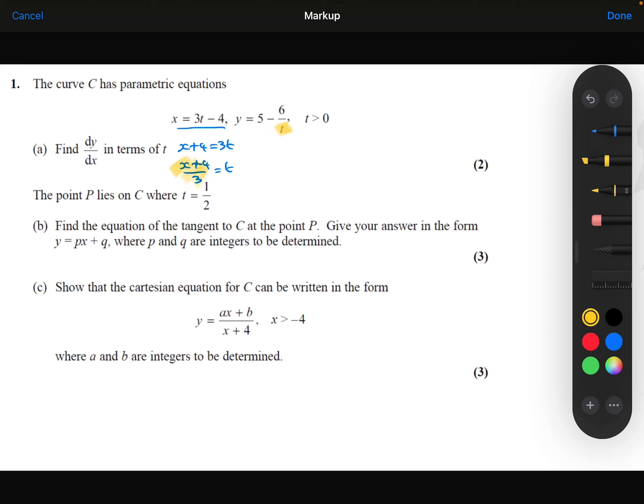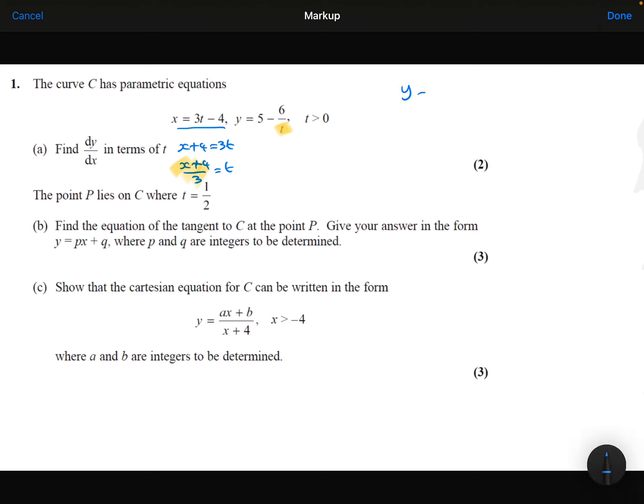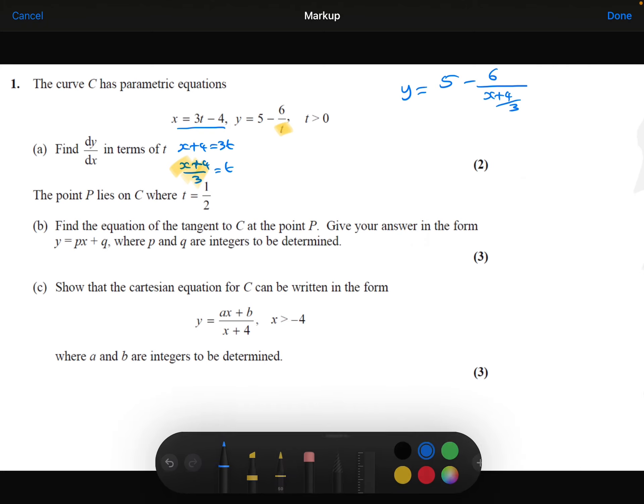Substituting this in instead of the t here, so I'll get y equals 5 minus 6 over the x plus 4 over 3.